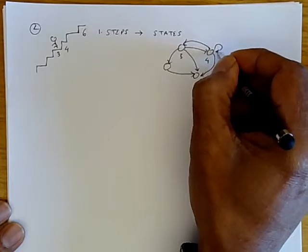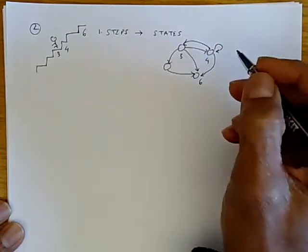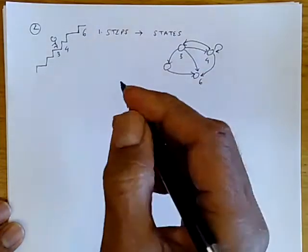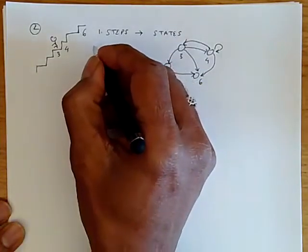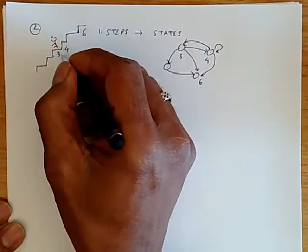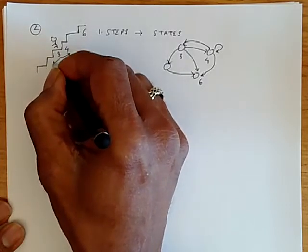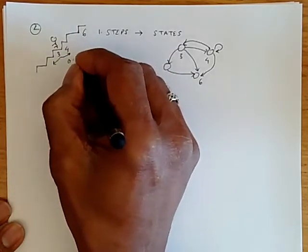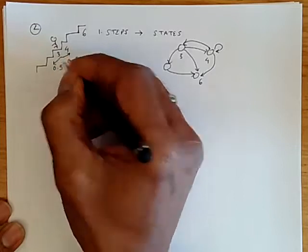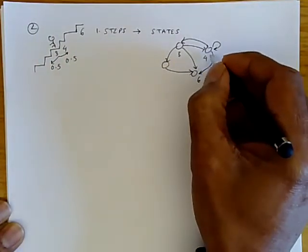And we can also have self loops where the process continues to remain in the same state. Now, just as with, in the example, the person went up or down with some probability. For example, they went up on heads and down on tails with probability 0.5 each. In the same way,